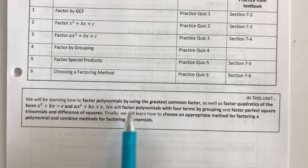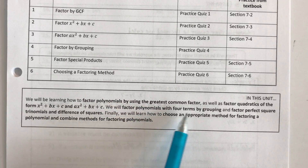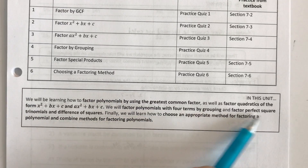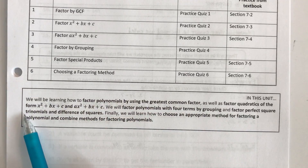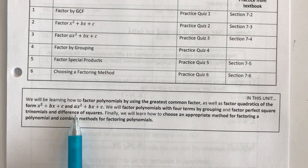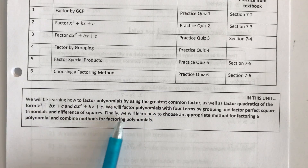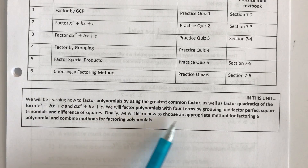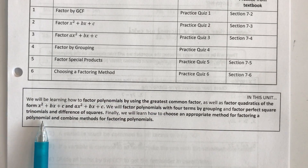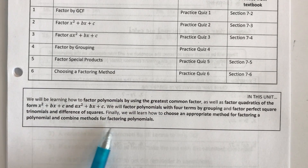We will factor polynomials with four terms by grouping, and factor perfect square trinomials and difference of squares. Finally, we will learn how to choose an appropriate method for factoring a polynomial and combine methods for factoring polynomials.